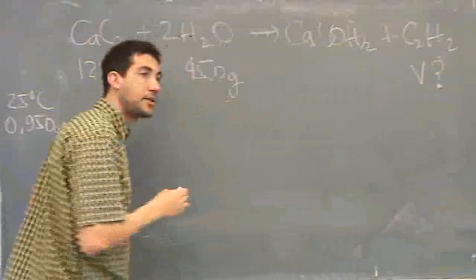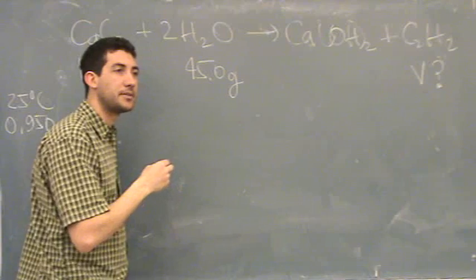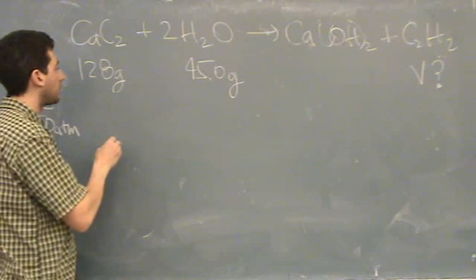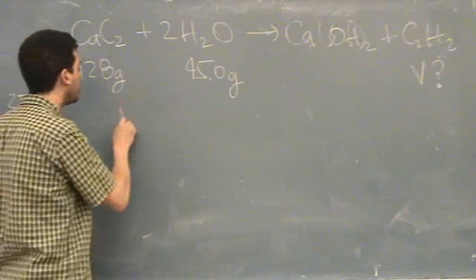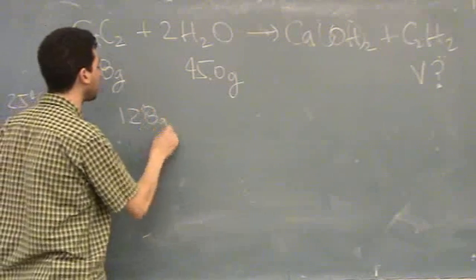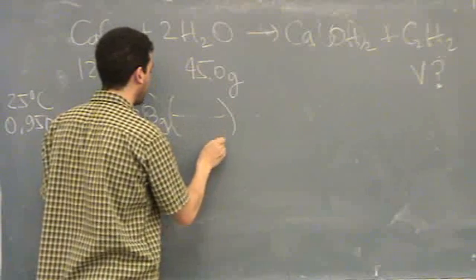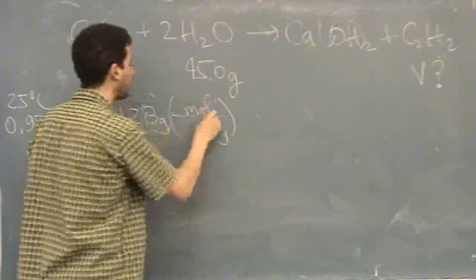So, do you want me to do the math on this or just the concept? Just the concept of why it's water, the limiting reactant. Okay, so you would take 128 grams times by the molar mass, whatever that is, of calcium carbide.